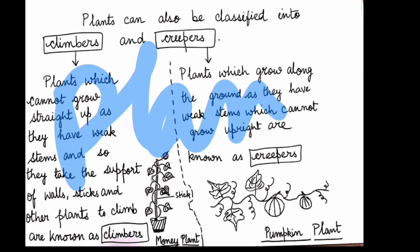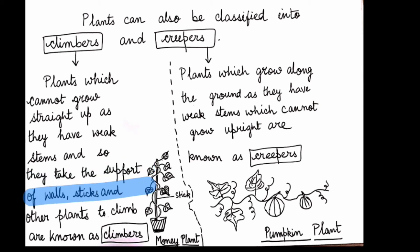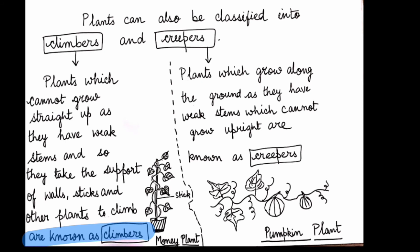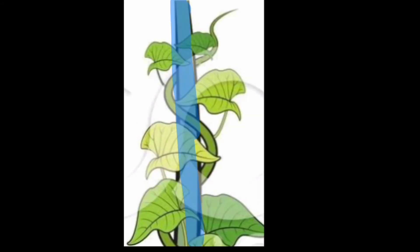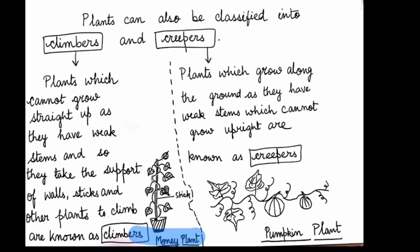Plants are also divided into climbers and creepers. Climbers are plants which cannot grow straight up as they have weak stems, so they take the support of walls or other plants to climb up. For example, the money plant climbs up with the help of a tree. Grape is also a climber.